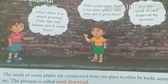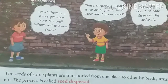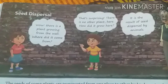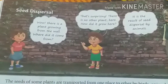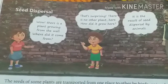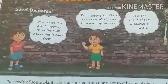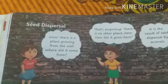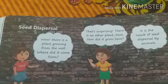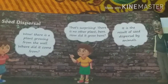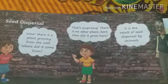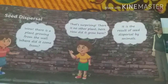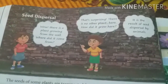Now here you can see seed dispersal. Wow — there is a plant growing from the wall! Where did it come from? Have you ever seen a plant grow from a wall? There is no other plant nearby, so how did it grow here? This is a result of seed dispersal by animals. Birds and some animals disperse seeds from one place to another.